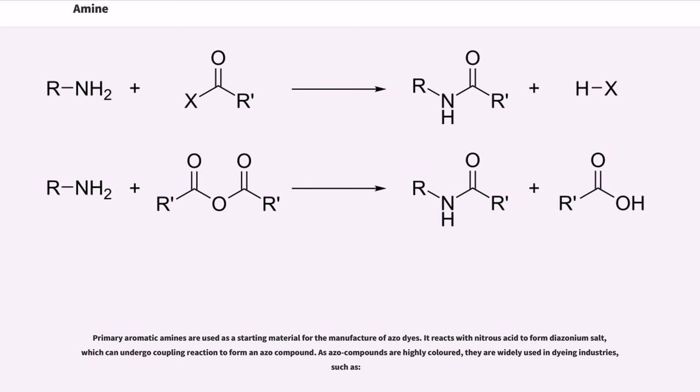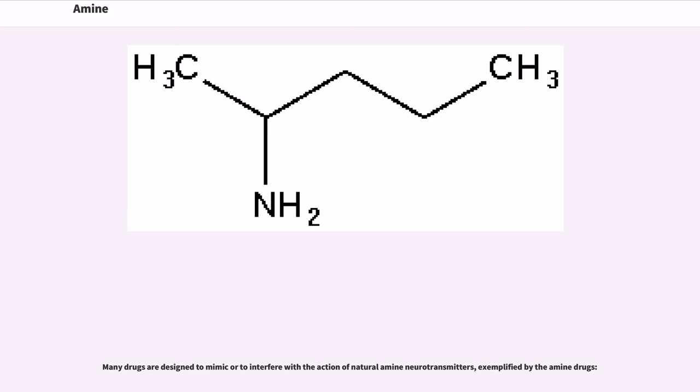Primary aromatic amines are used as a starting material for the manufacture of azo dyes. It reacts with nitrous acid to form diazonium salt, which can undergo coupling reaction to form an azo compound. As azo compounds are highly colored, they are widely used in dyeing industries, such as. Many drugs are designed to mimic or to interfere with the action of natural amine neurotransmitters, exemplified by the amine drugs.